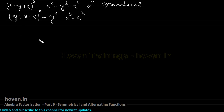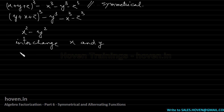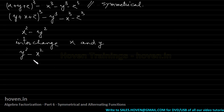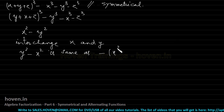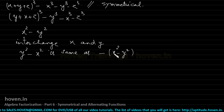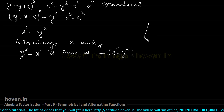Now consider the expression x squared minus y squared. If we interchange x and y, we get y squared minus x squared, which is the same as minus of x squared minus y squared. In this case, the value has not remained the same — the sign has reversed. It was a plus sign before; now the sign is minus. Interchange of x and y has not maintained the value, so this is not symmetrical.